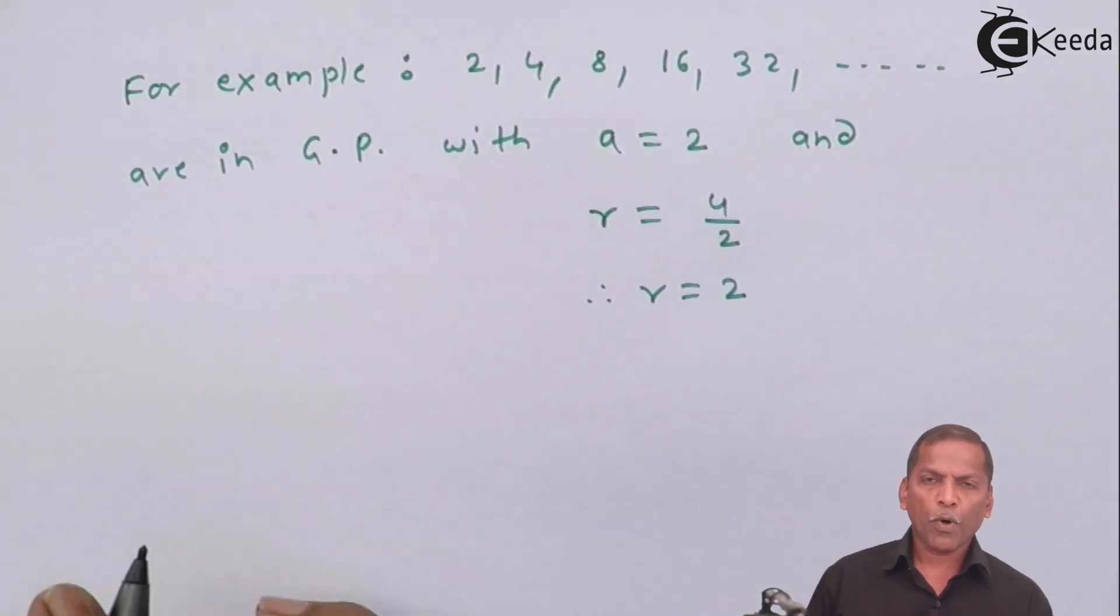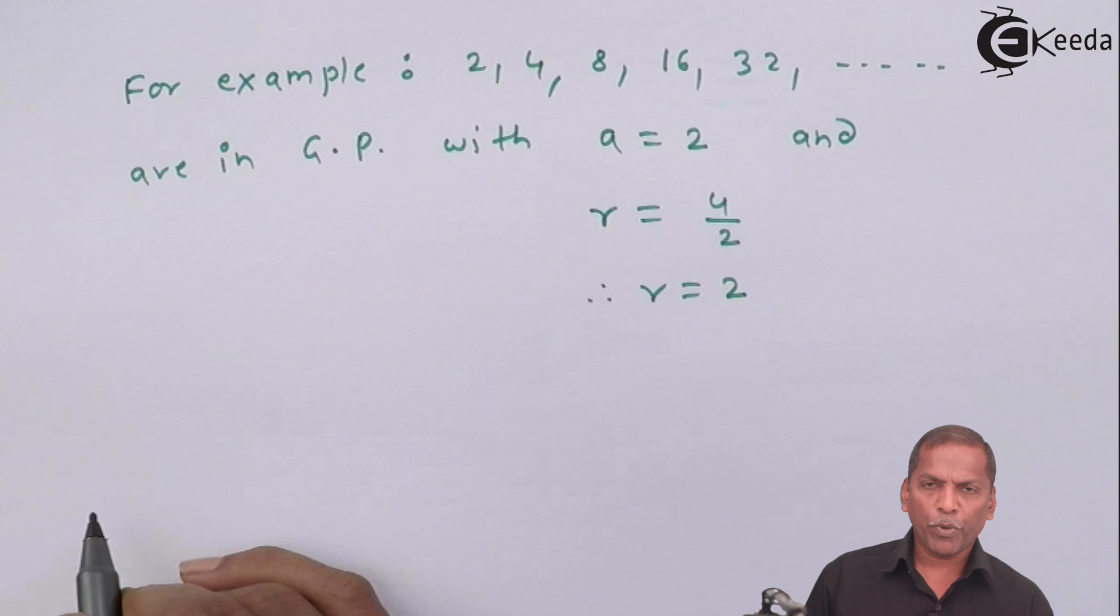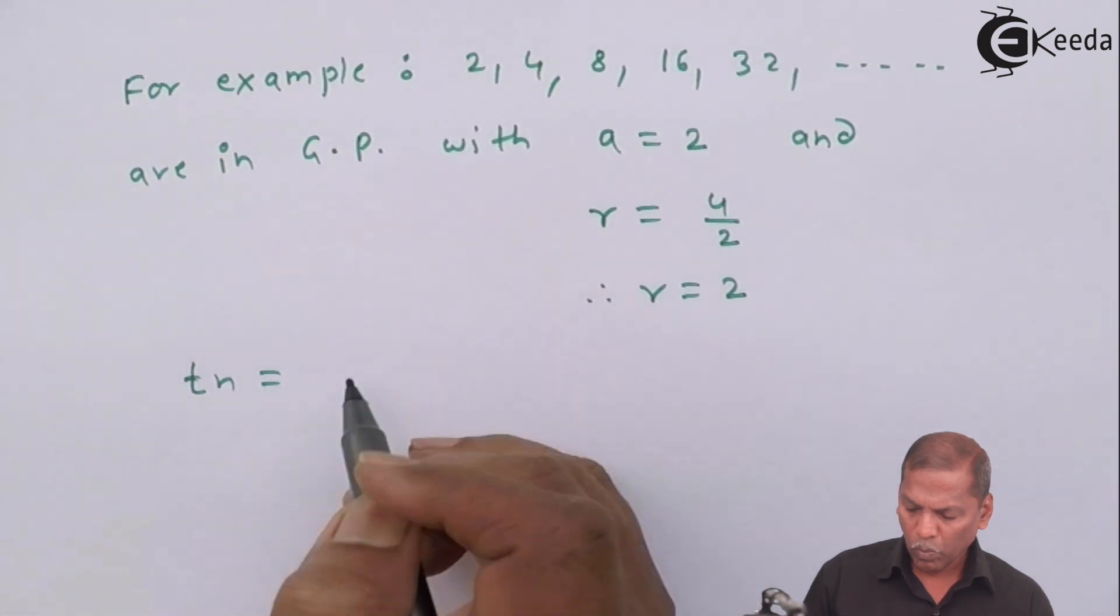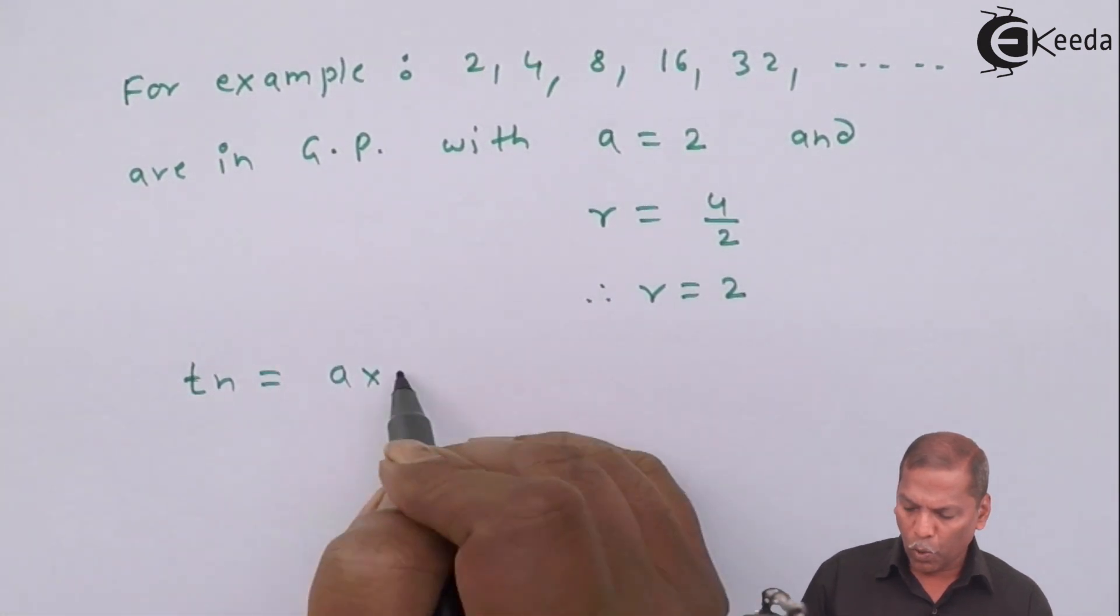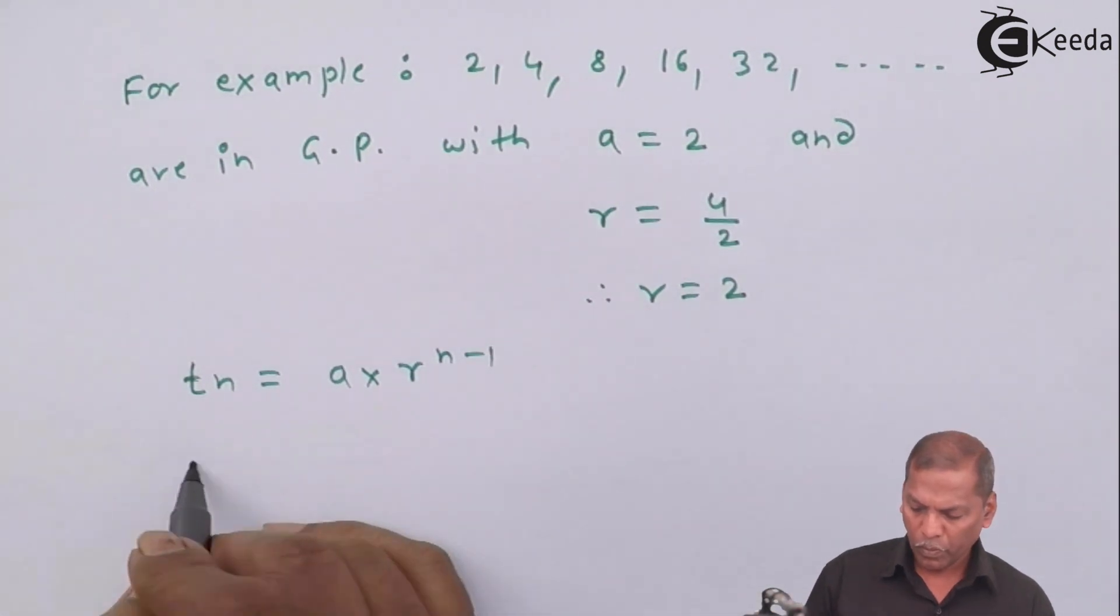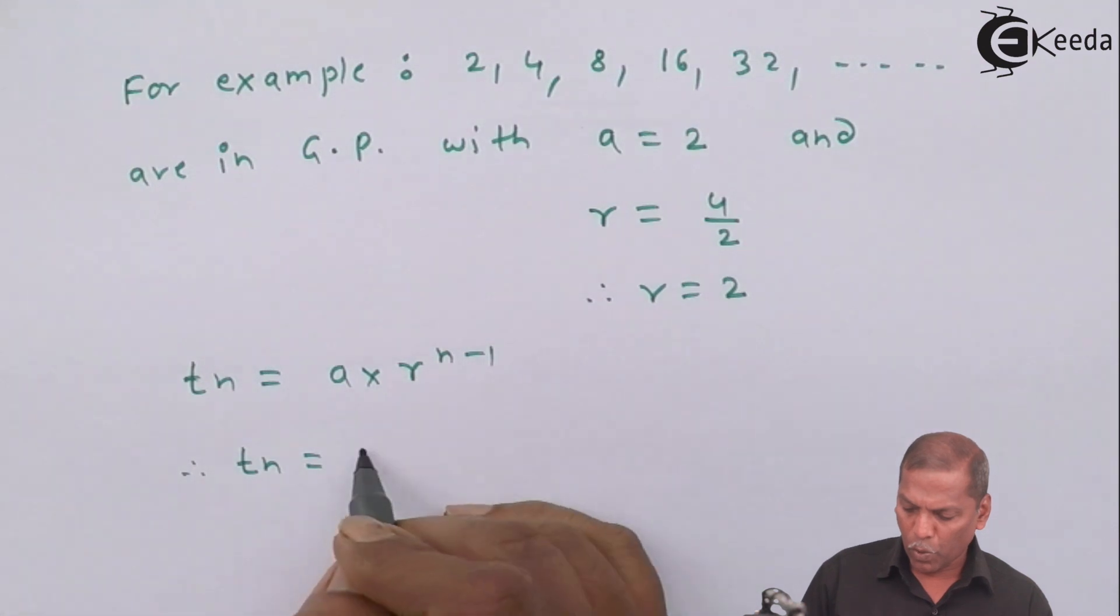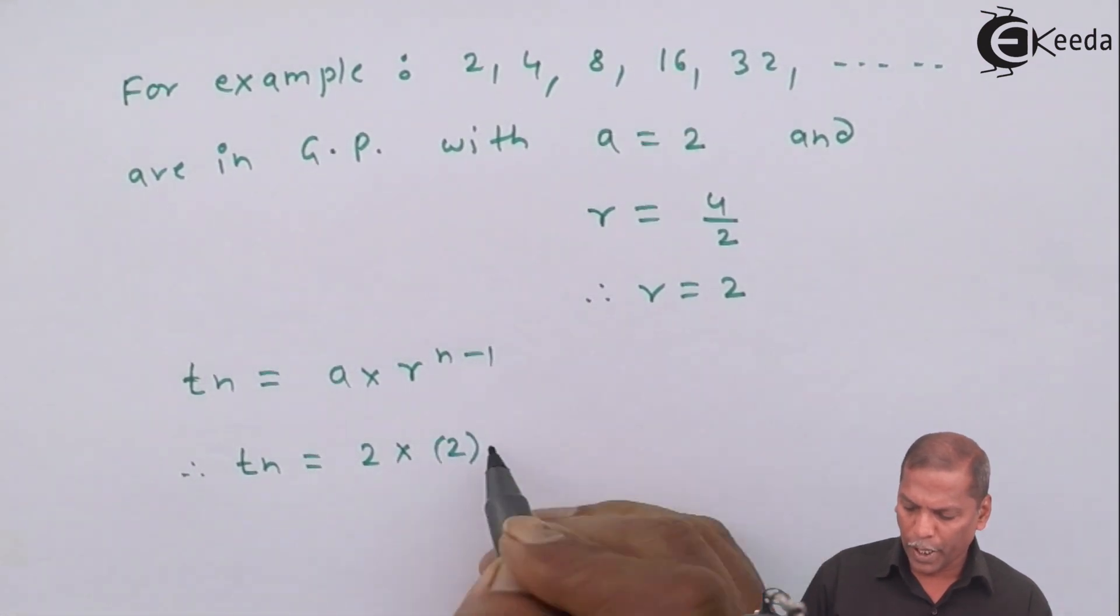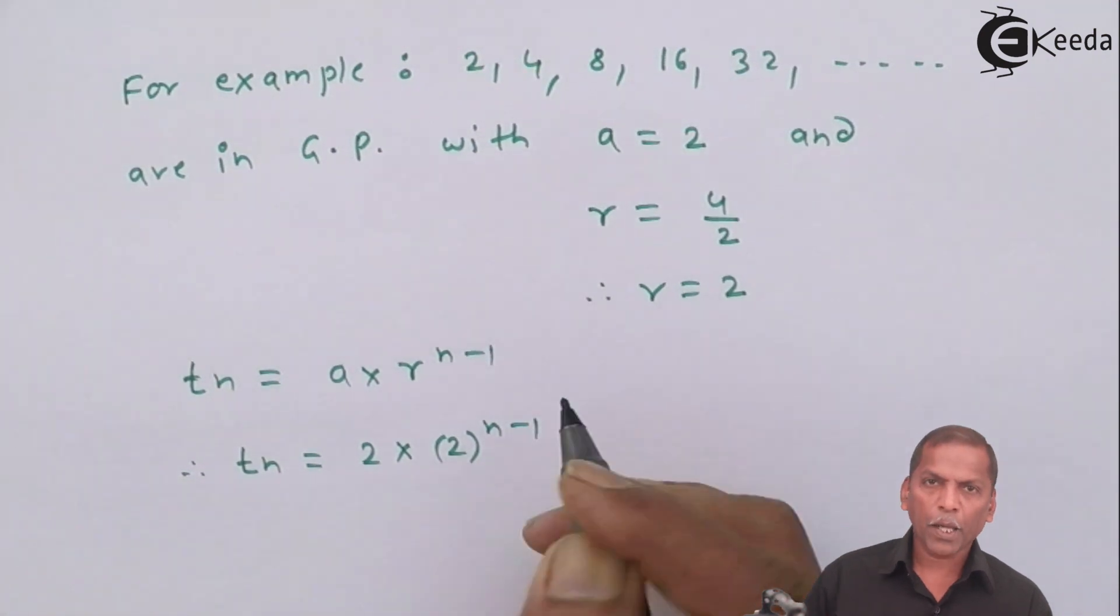Now formula for nth term of GP is given by Tn equals a into r raise n minus 1. And therefore, Tn equals 2 into 2 raise n minus 1.